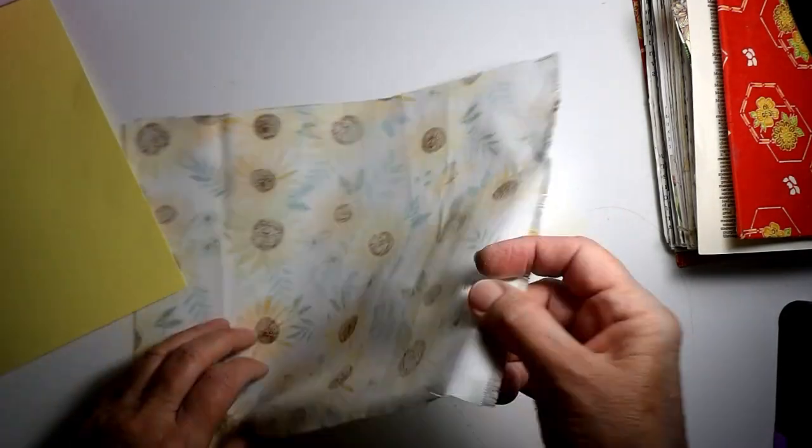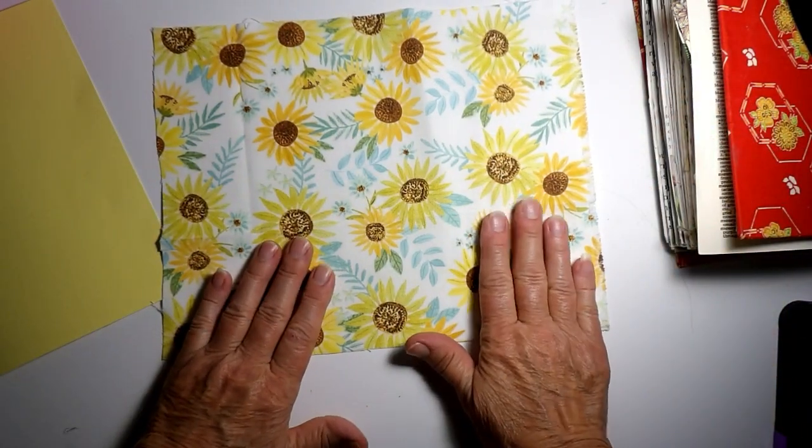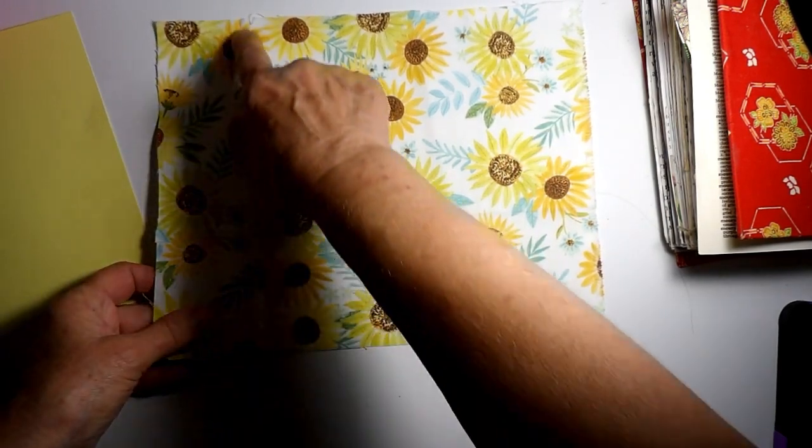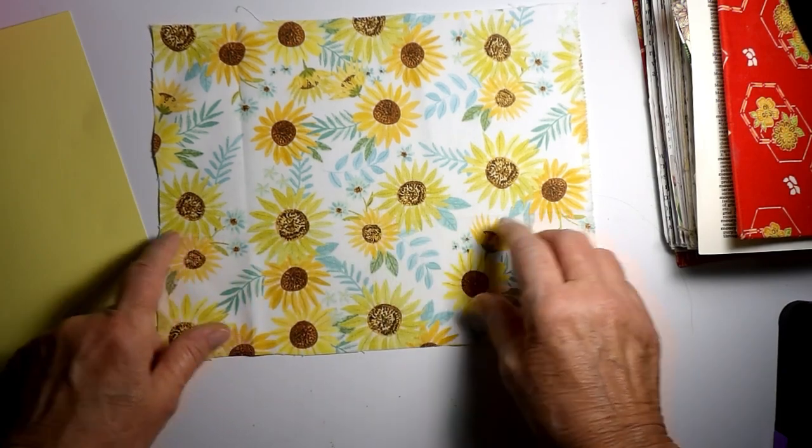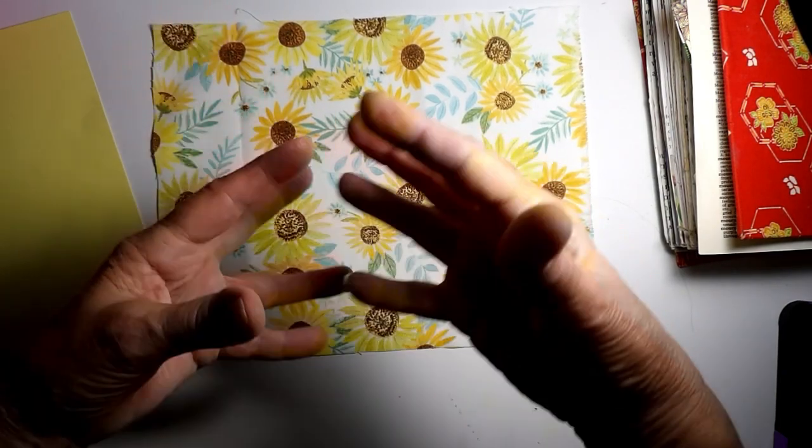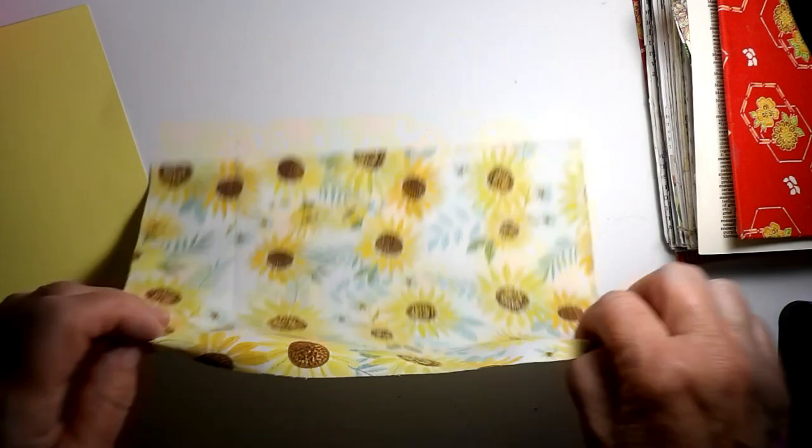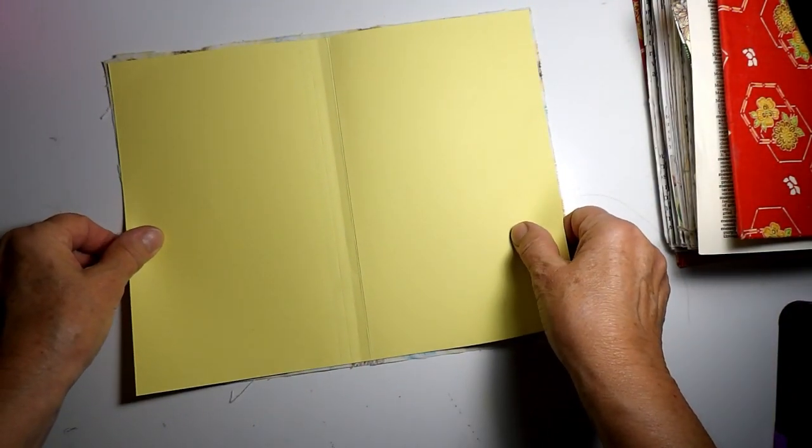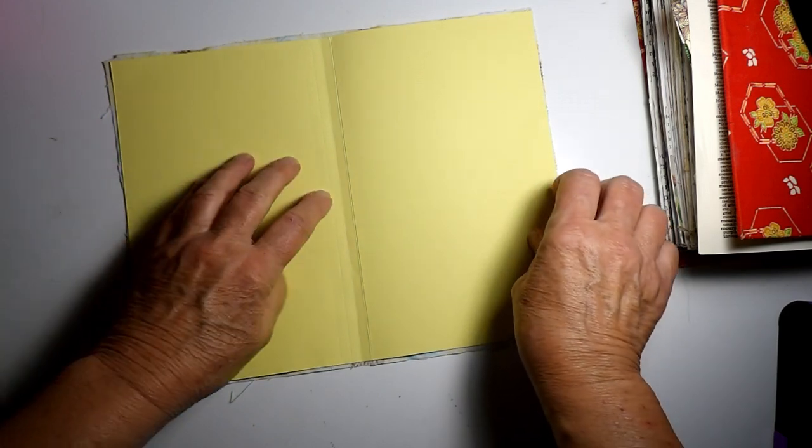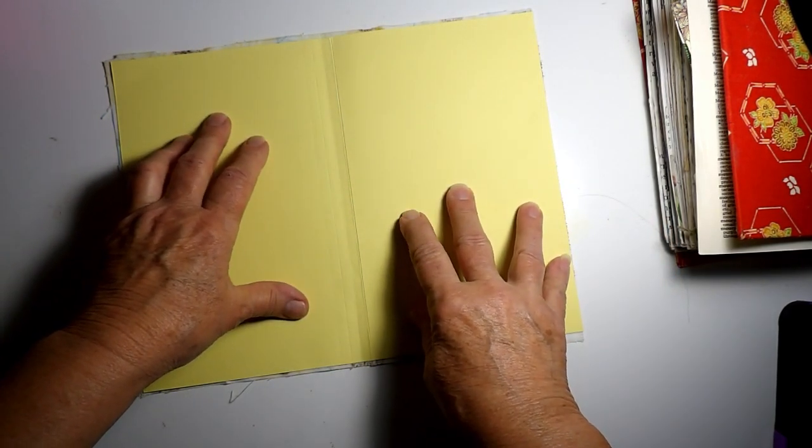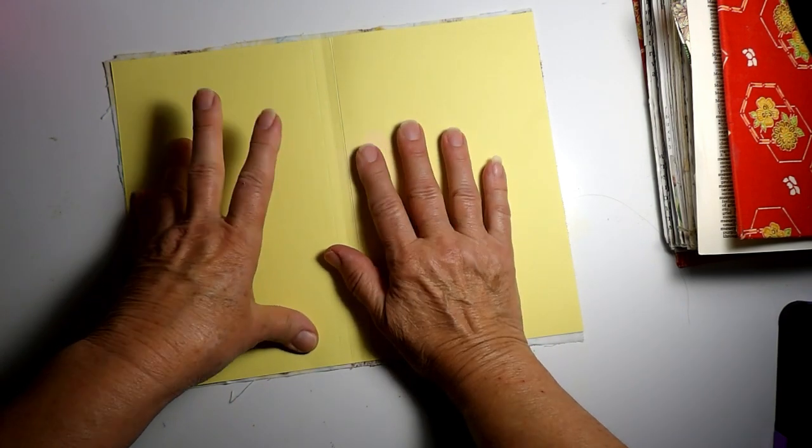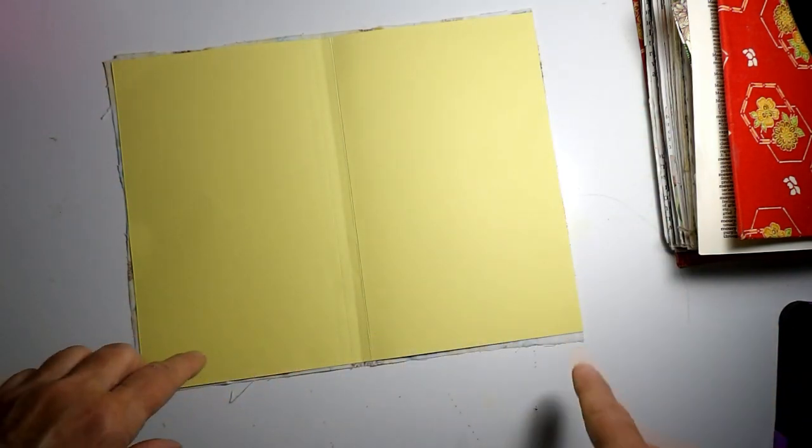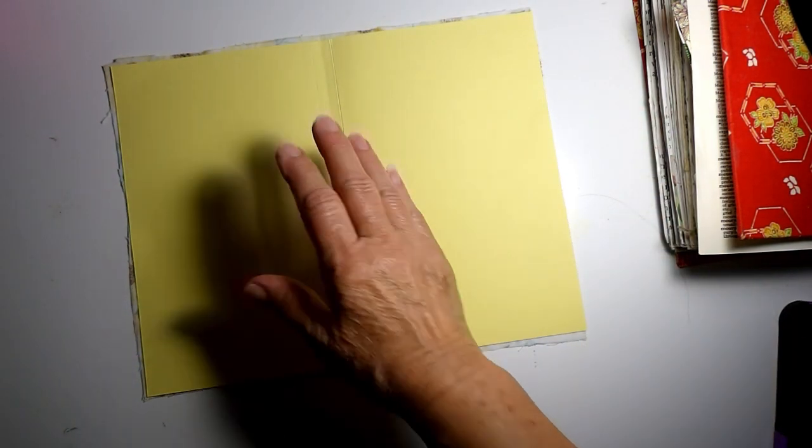For this one, I cut down a Dollar Tree yellow file folder and I got some Dollar Tree sunflower fabric. For the life of me, I can't get all the wrinkles or the creases out. If you have any tricks for getting that out, let me know. But what I think I'm going to do is just glue in the middle with just a little bit of glue stick to hold it in place and then sew around the edges.